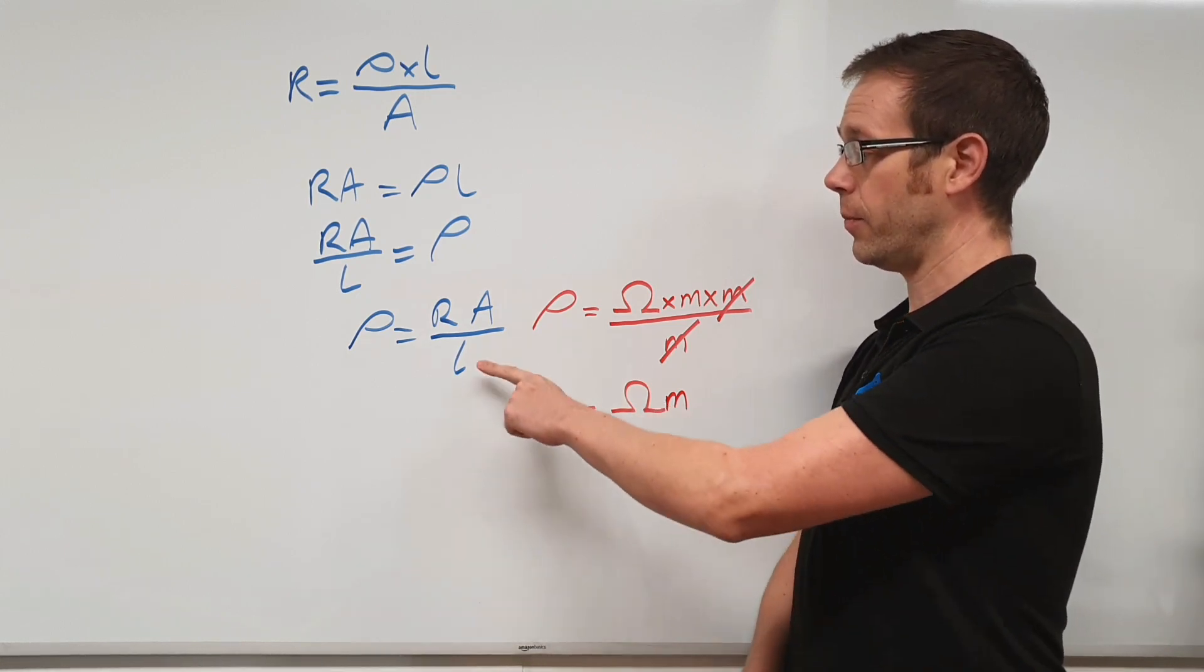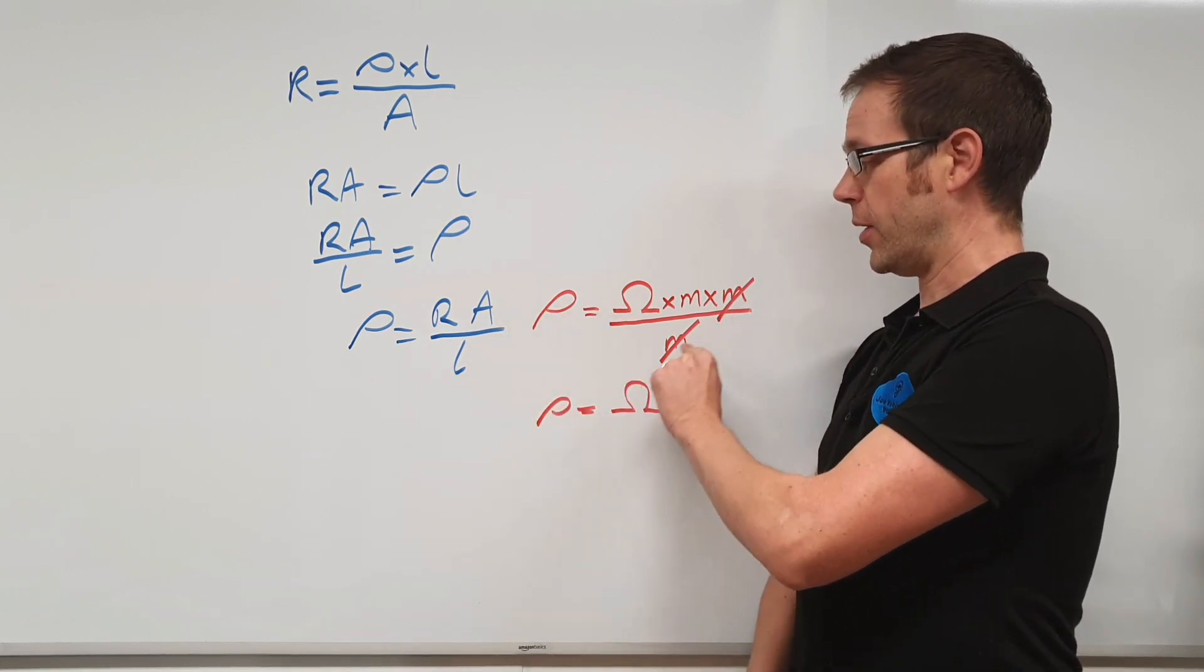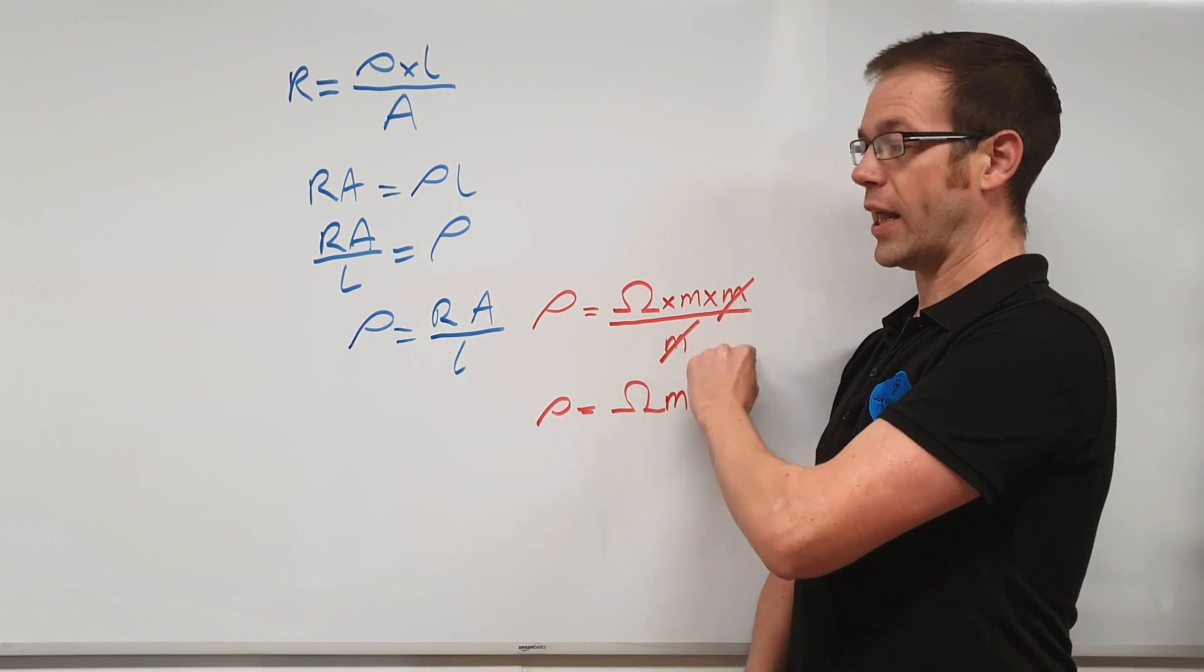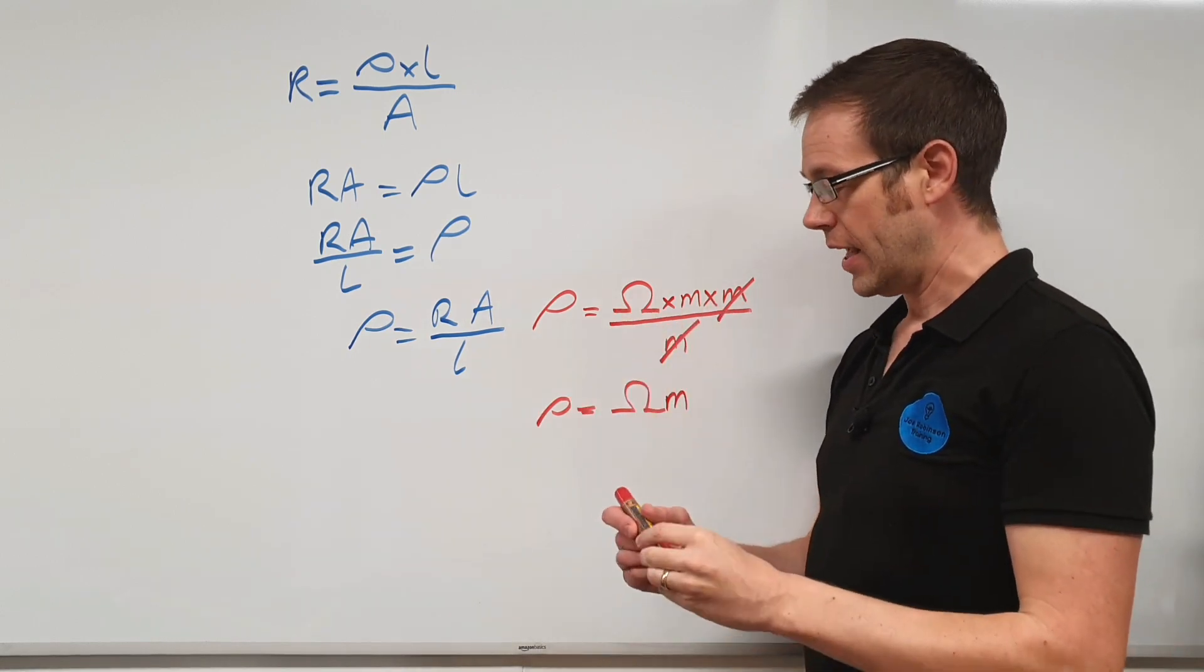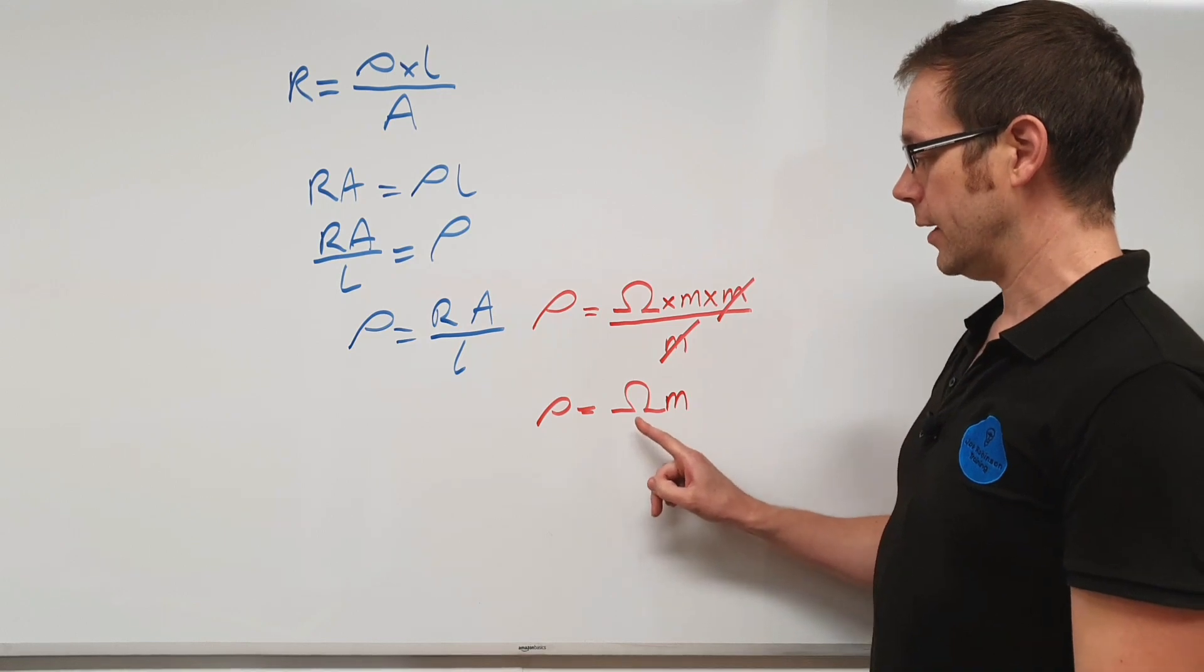It very simply starts from this formula, and then we just kind of get rid of the unnecessary parts of this where performing one action cancels out another action. And that leaves us with the unit for resistivity, which is the ohm meter.